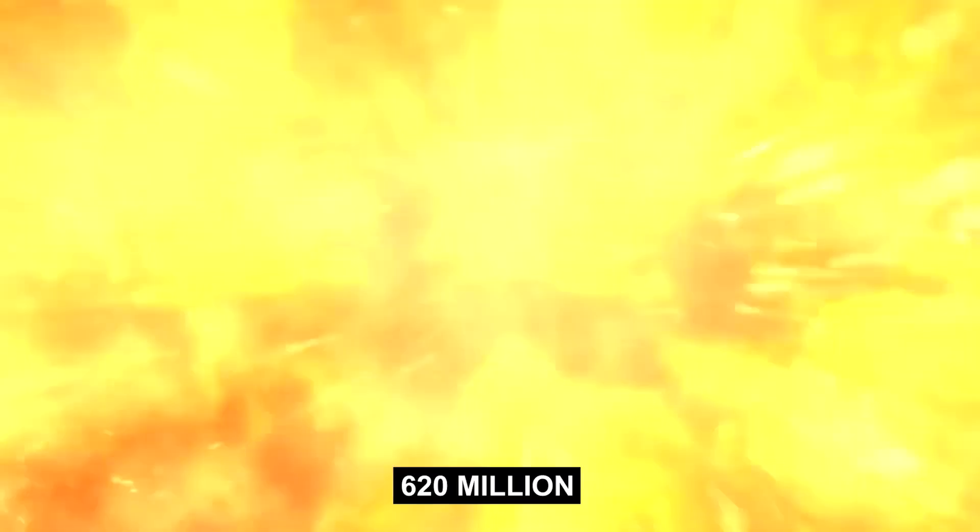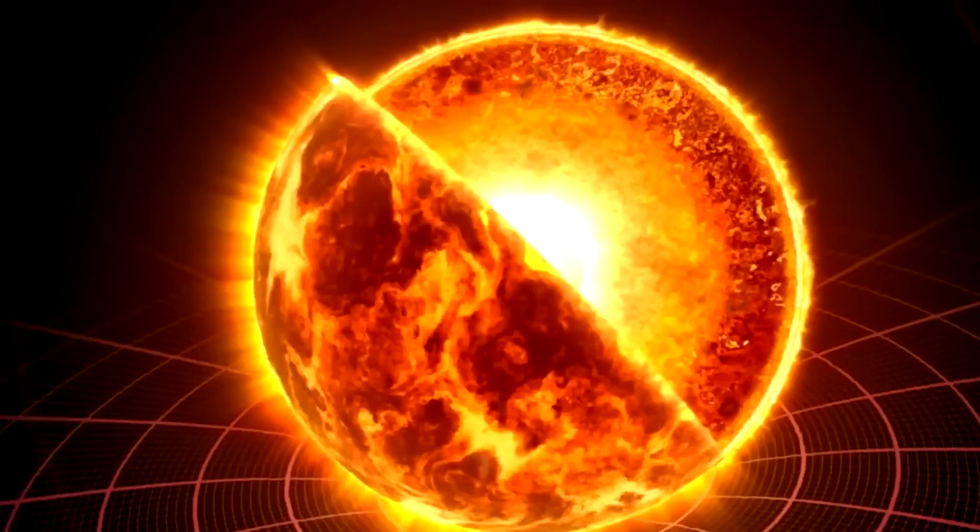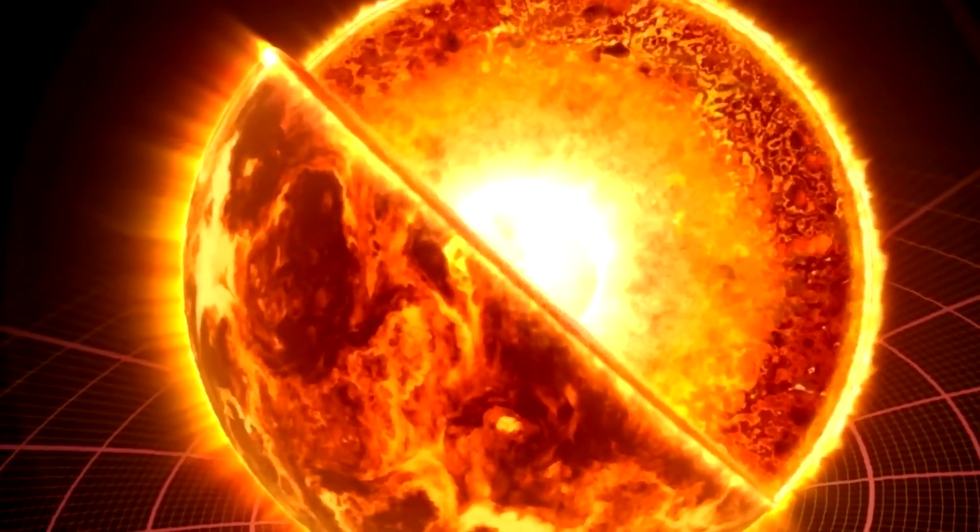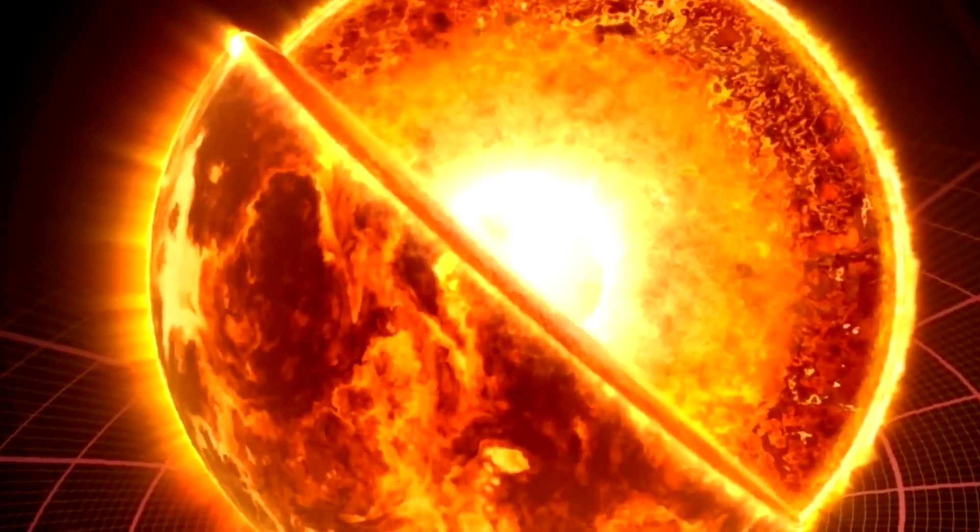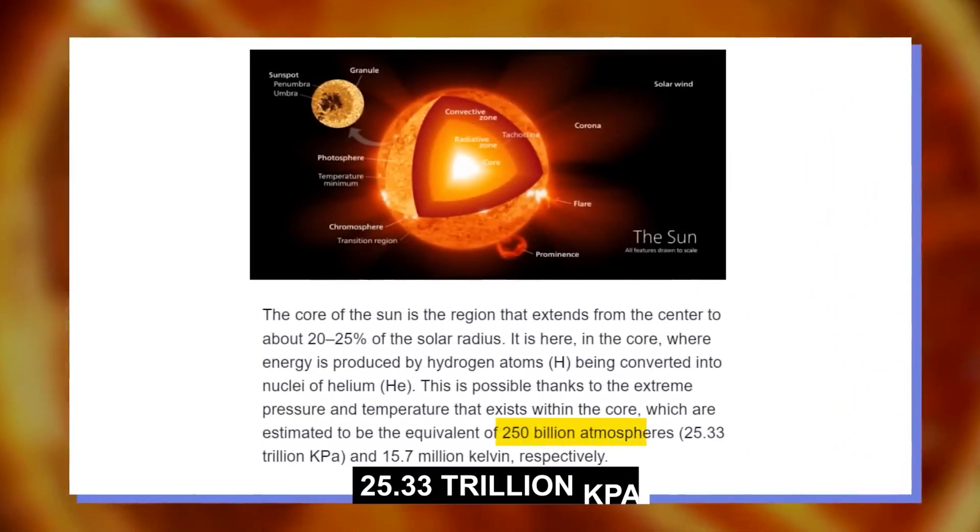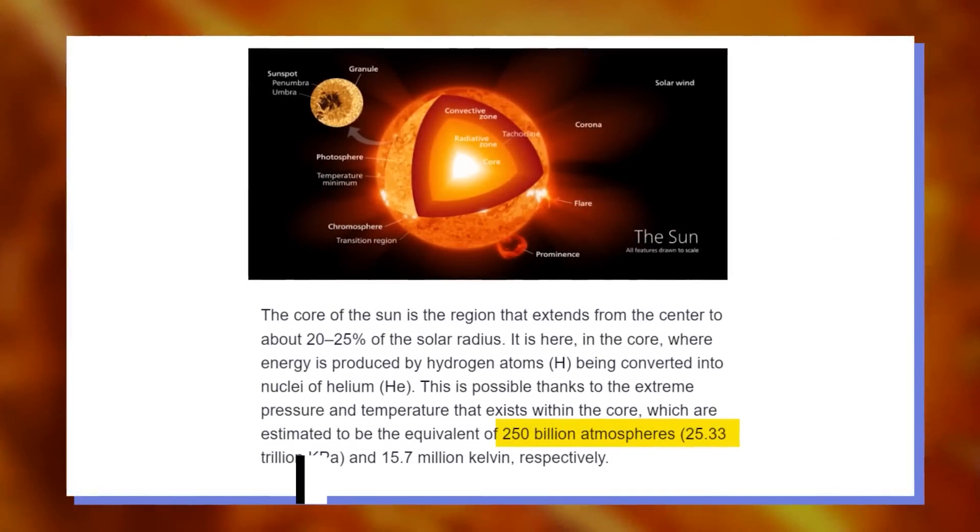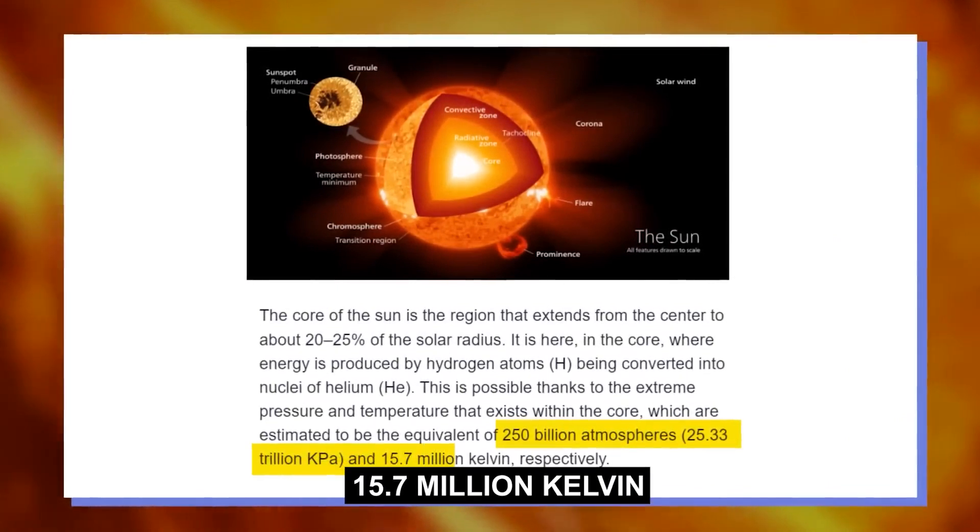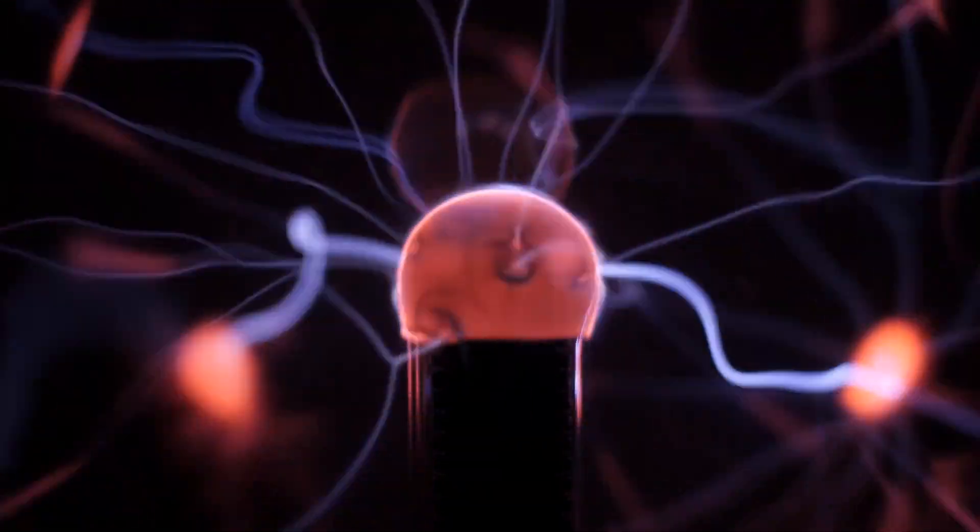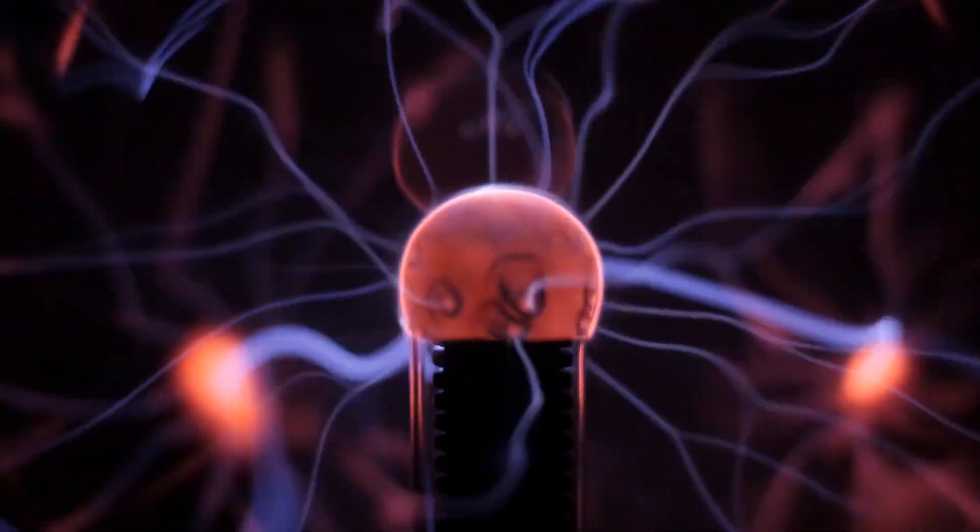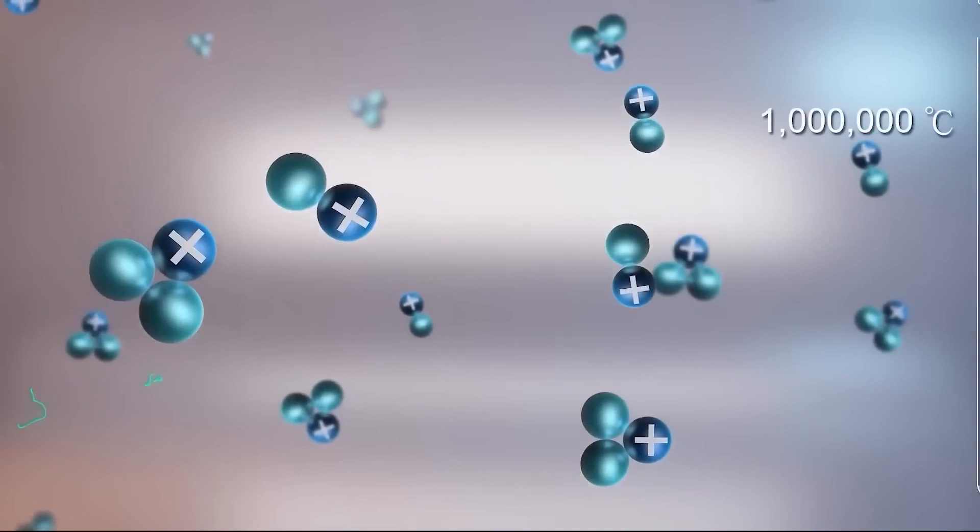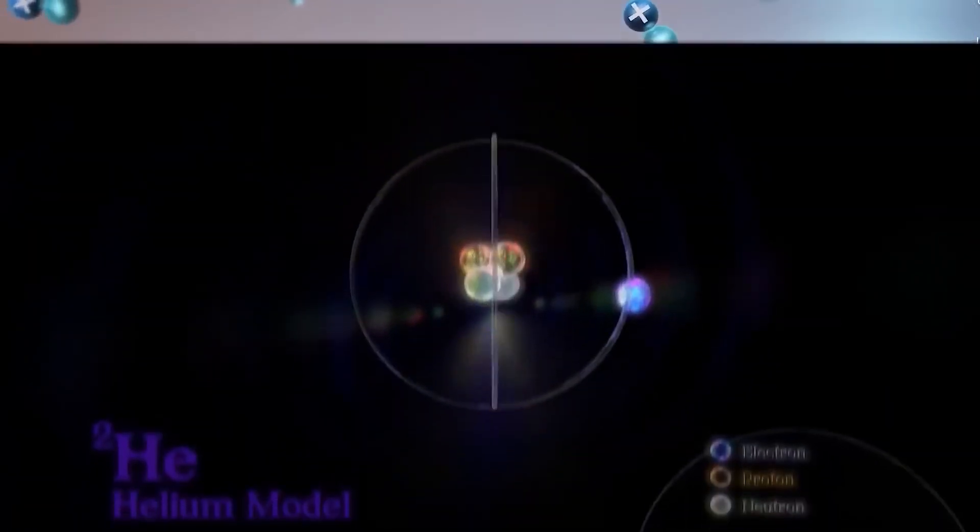Approximately 620 million metric tons of hydrogen are fused by the Sun every second. The occurrence of this reaction becomes achievable due to the immense levels of pressure and temperature residing within the core. These conditions are estimated to be equivalent to an astonishing 250 billion atmospheres or 25.33 billion kilopascals, and the scorching 15.7 million Kelvin, respectively. As a result of the fusion of four protons or hydrogen nuclei occurs smoothly, leading to the creation of an alpha particle. This particle consists of two protons and two neutrons tightly bound together, resembling the composition of a helium nucleus.